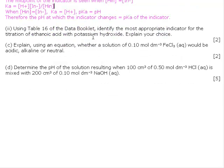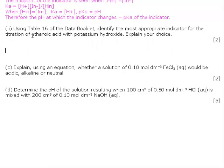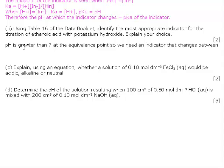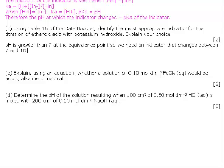Using table 16 of the data booklet, identify the most appropriate indicator for the titration of ethanoic acid with potassium hydroxide. What we're looking for here, we need to recognize that the pH is going to be greater than 7 at the equivalence point. So we need an indicator that changes between 7 and 10, and the ideal choice here is phenolphthalein.